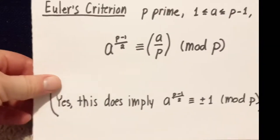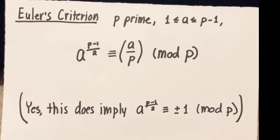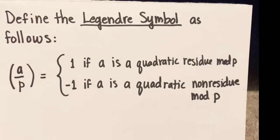Euler's criterion is a nice shortcut because it tells us that if we look at a to the p minus 1 over 2, and we reduce that mod p, then we get the value of the Legendre symbol. So a to the p minus 1 over 2 will be either plus or minus 1 mod p, and it will be the value of the Legendre symbol. Evaluating that congruence will actually tell us if a is a quadratic residue or not modulo p.